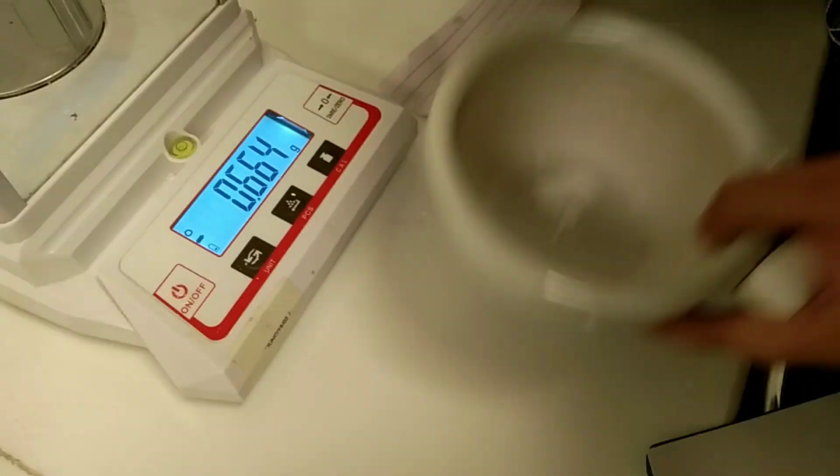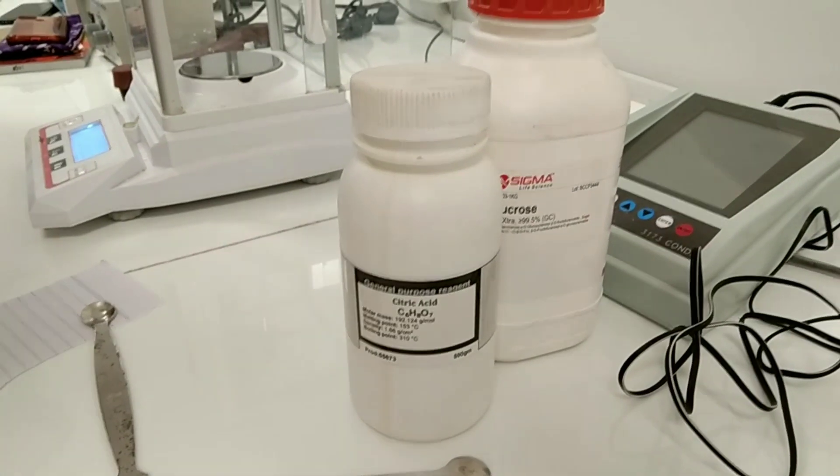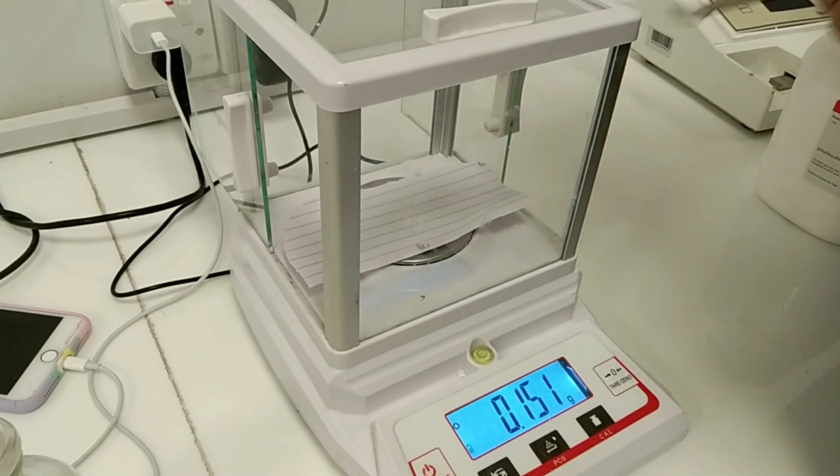After keeping this into the mortar, the next step is to take citric acid, 0.1 gram, as a flavoring agent.